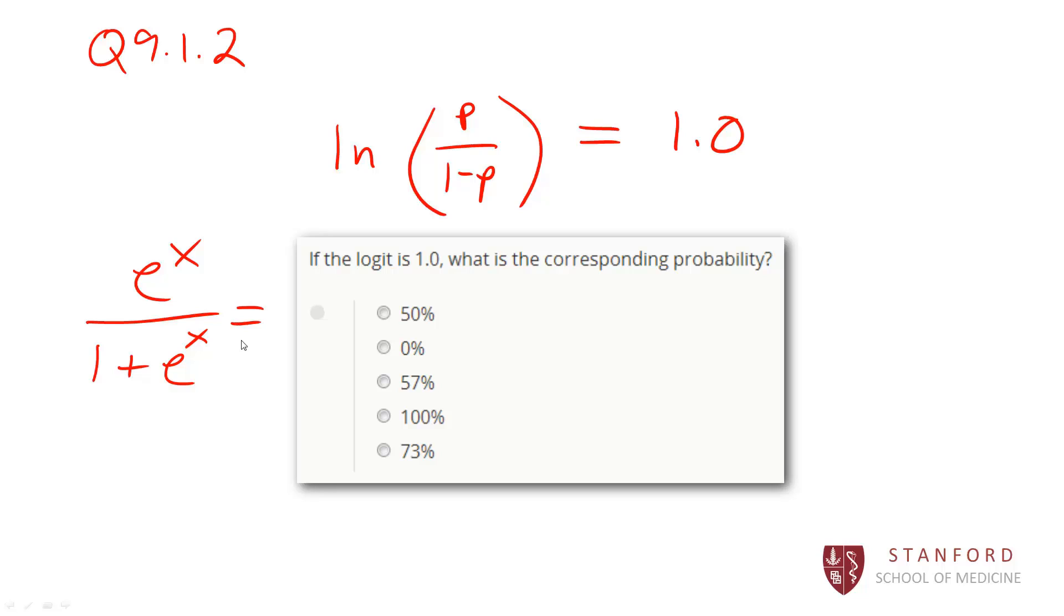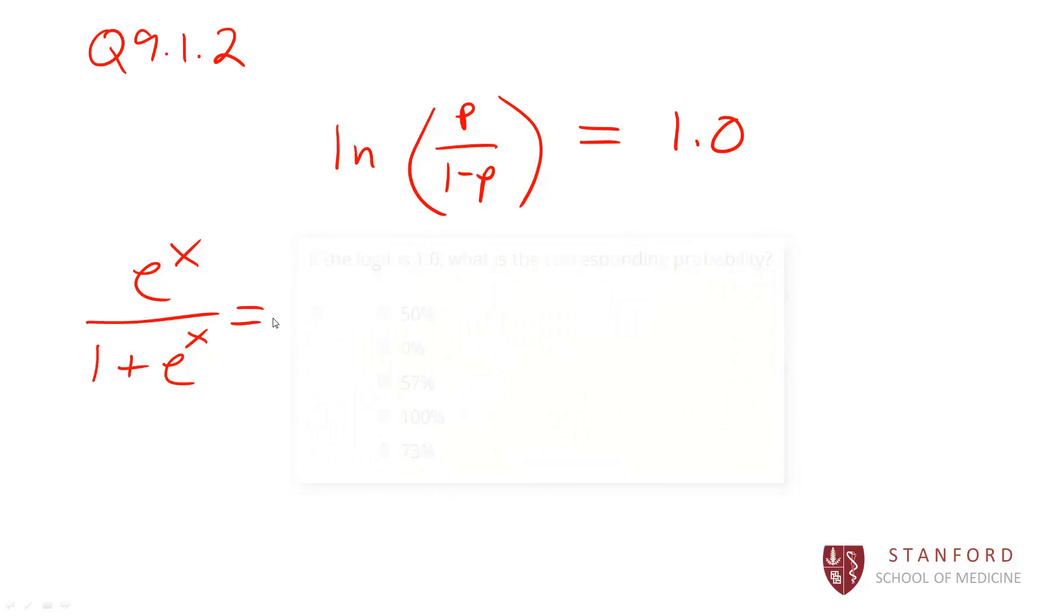That will give you, if you put in the logit where x is here, that will give you the probability. But we can solve this algebraically. So you would just exponentiate both sides here.